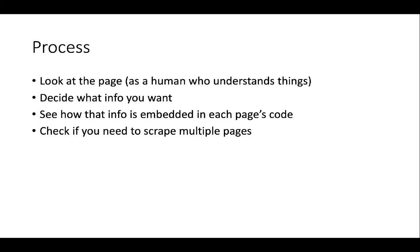We also checked how to scrape multiple pages. We could have extracted links to the next page from the bottom of each directory page, but we also saw a really common trick: the URL often embeds a page number, and you can detect when you've run out of data by checking whether any profile links are found. Sometimes you won't be able to use that URL trick and will have to find the next link at the bottom of each page, but it showed us how to go through each directory page and extract links to individual profile pages into a data structure to loop through.